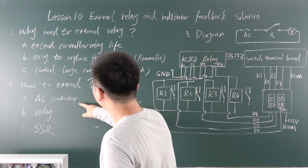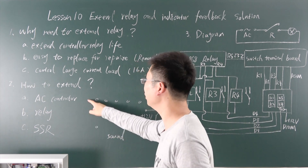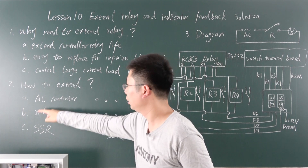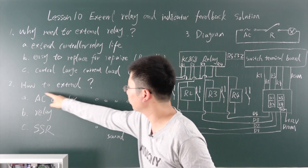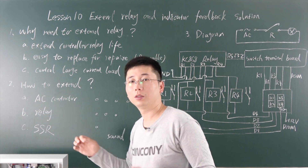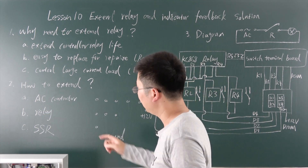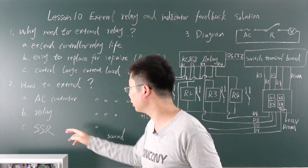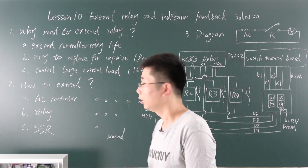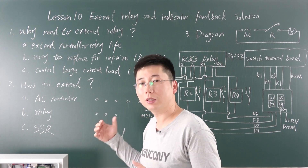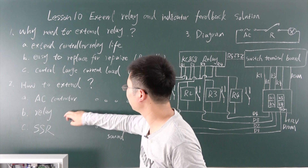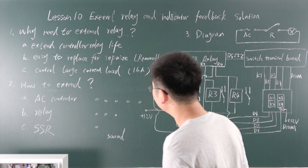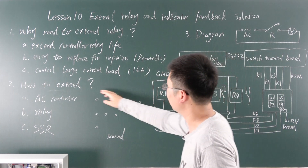But the AC contactor is best for large power loads — it is the safest. The relay is second safest, and the SSR is third, because the AC contactor and relay use physical contacts, while the SSR operates by electronic components inside. So for safety, the AC contactor and relay are the best two options.